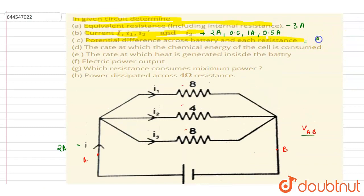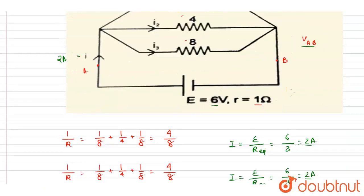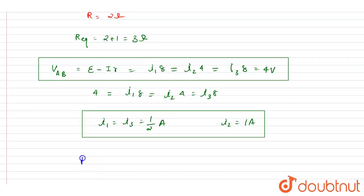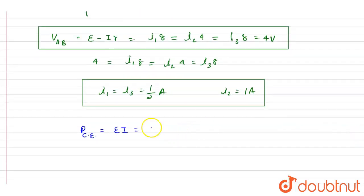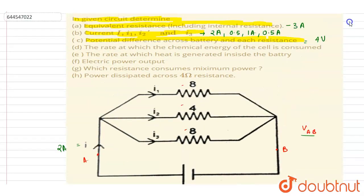Now let's move to the next part: the rate at which the chemical energy of the cell is being consumed. The rate of chemical energy consumed equals e × i. Here e is 6 volts and i is 2 amperes, so the rate is 6 × 2 = 12 watts.